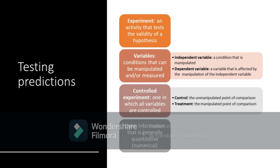We need to consider variables. There are two variables involved: the independent variable and the dependent variable. The independent variable is a condition that is manipulated — a variable that can stand alone. The dependent variable is the variable that is being measured. We also have the controlled experiment, in which all variables are controlled or constant — this is the unmanipulated point of comparison. The treatment is the manipulated point of comparison. These experiments may lead to data gathering, and this data will provide information that is generally quantitative — meaning numerical, in the form of numbers.